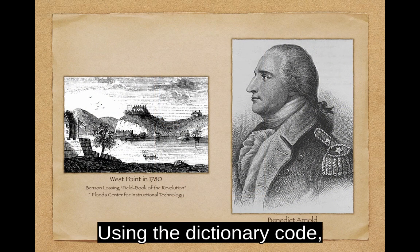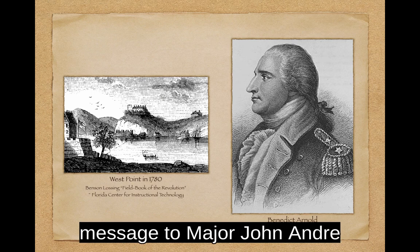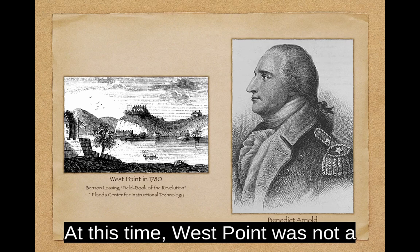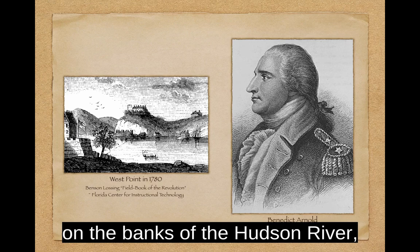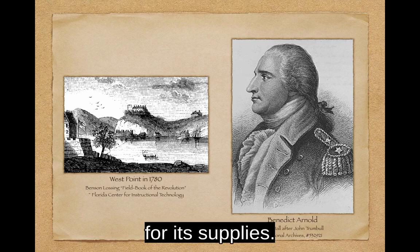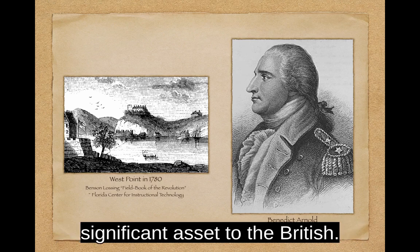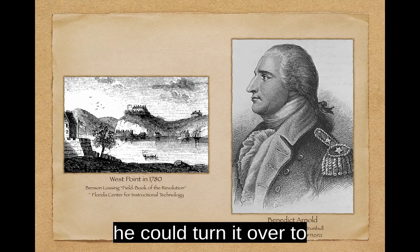Using the dictionary code, Benedict Arnold wrote a coded message to Major John Andre proposing the sale of West Point. At this time, West Point was not a military academy — it was an important fortification on the banks of the Hudson River, valuable not only for its strategic location, but also for its supplies. Arnold knew West Point would be a significant asset to the British. If he had command of the garrison, he could turn it over to the British.